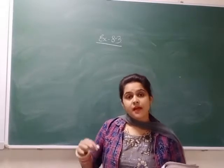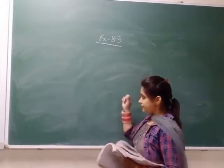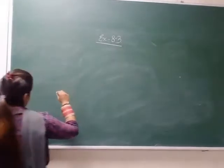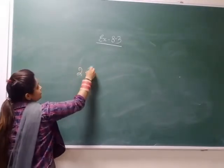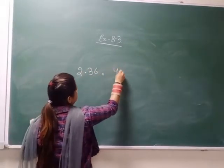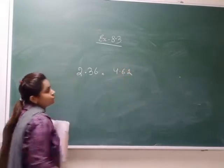How do we compare the decimal numbers? See here. We have three decimal numbers. How do we compare the decimal numbers?